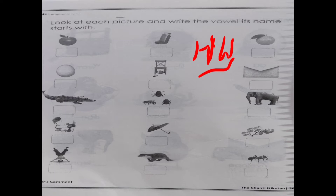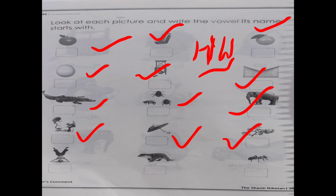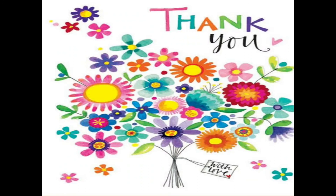These pictures you have to do. First picture is apple, inhaler, orange, egg, under, envelope, alligator, insects, elephant, ill, umbrella, orchid, upside down, otter, and ant. So ab aapko achse se five special letters samaj mein aagaye hai. Ye jo aapko homework diya hai, ye without help, aapne parents ki bina help ke, aapko karna hai. Thank you so much everyone.